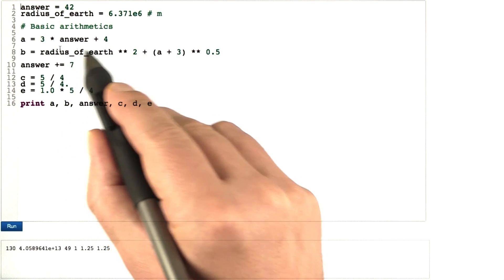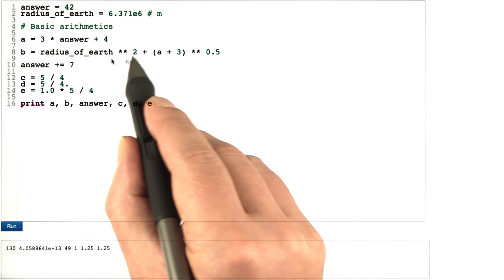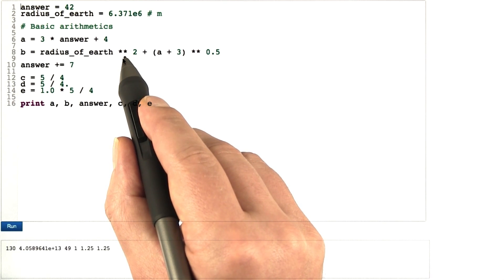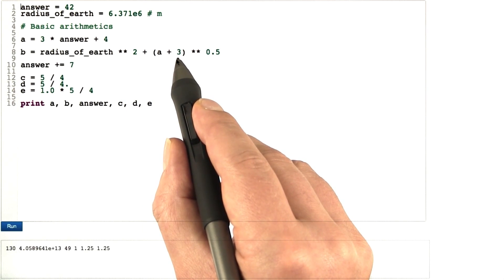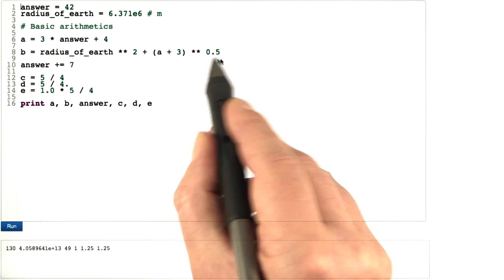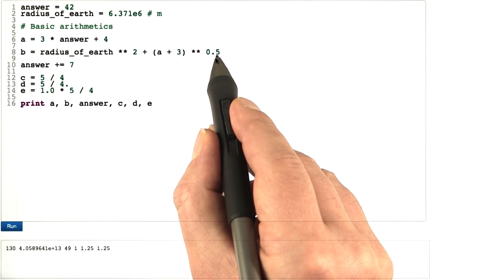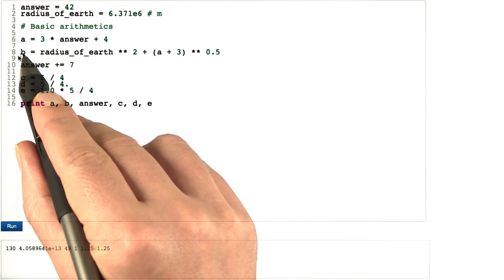Note that multiplication and division are executed before plus and minus. Now we take the radius of earth to the second power. Asterisk-asterisk represents the power operator in Python, unlike C or Java. Parentheses work as they work in school. The power operator 0.5 means this is the square root — that's one way of writing the square root of a plus 3. The result is assigned to b.